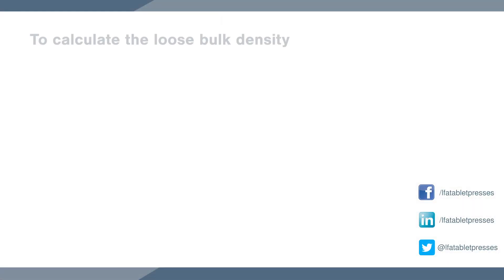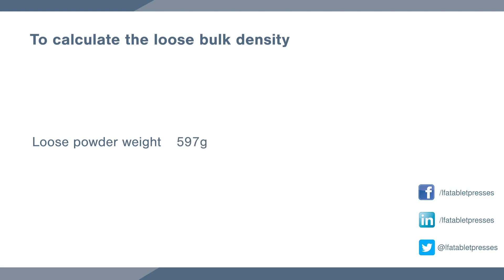To calculate the loose bulk density, we take the weight of the full cylinder — in our example that is 597 grams — and divide it by the 1000 millilitres in the cylinder, which gives us 0.597 grams per millilitre or centimetre cubed.